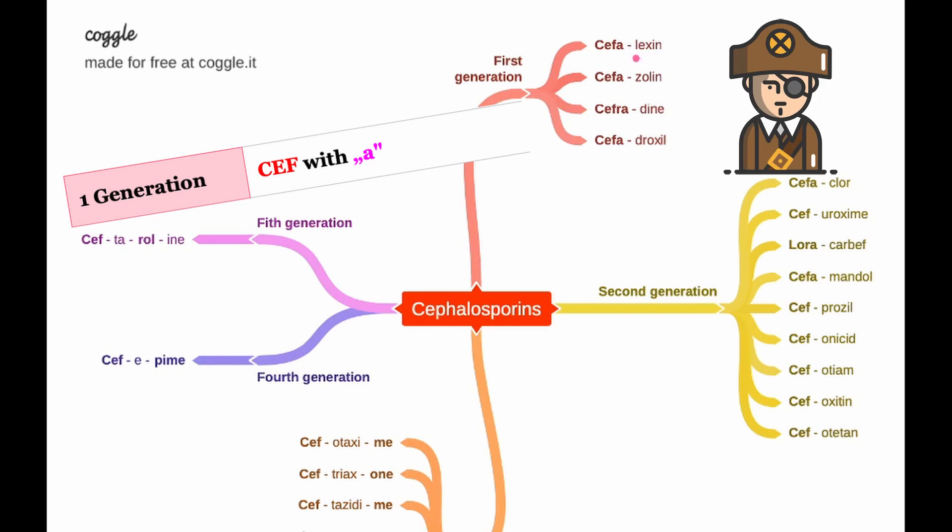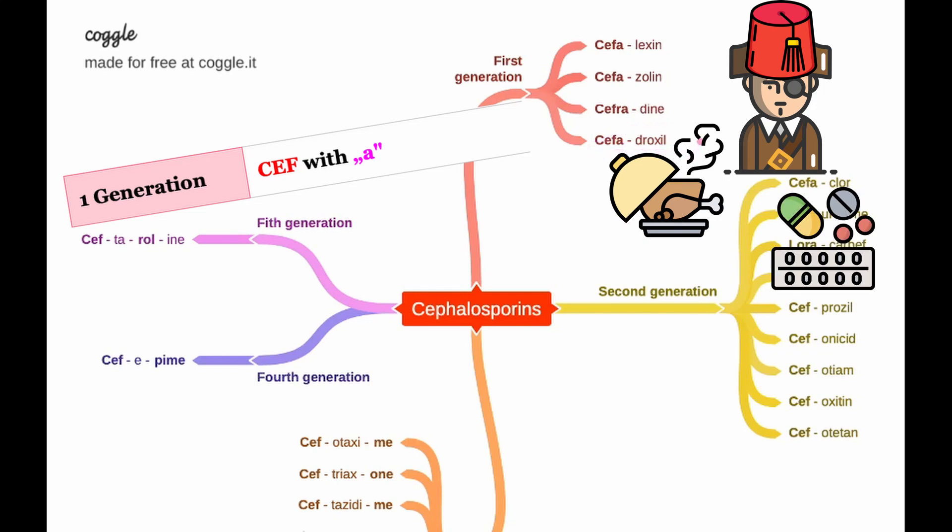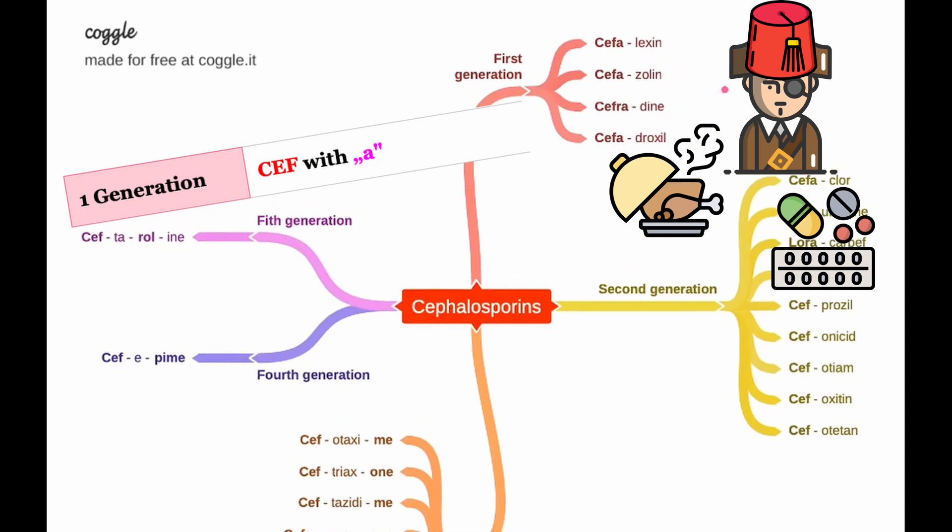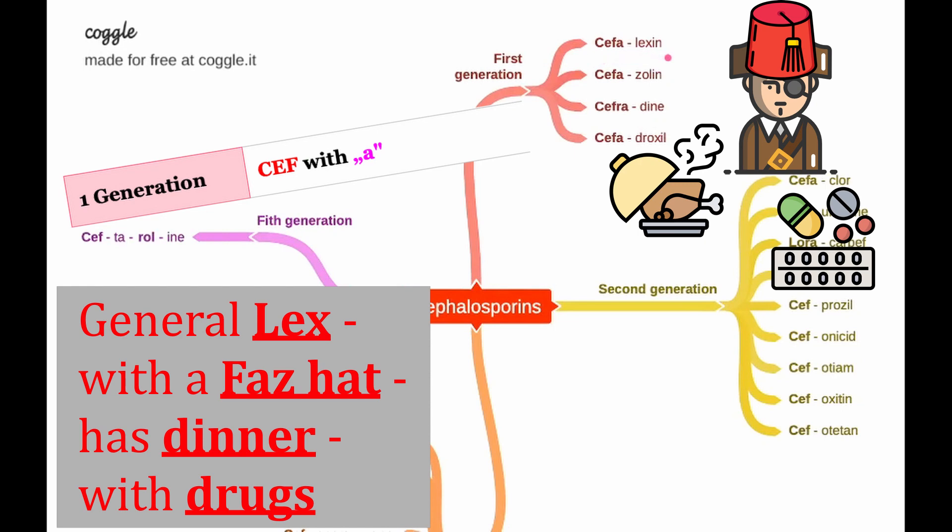Lexin sounds like general Lex to me, like a general's name. The next one cefazolin, so you have again the rule 'cef-a' then zolin sounds like a fast hat. Cefradine, cef with 'a' in the beginning, dine sounds like dinner. Cefadroxil, cef-a in the beginning, droxil sounds like drugs. Now if you remember this sentence you're gonna remember all of them: imagine General Lex, cephalexin, with a fast hat, cefazolin, has dinner, cefradine, with drugs, cefadroxil.